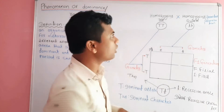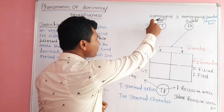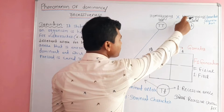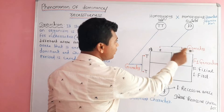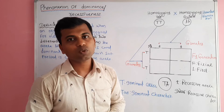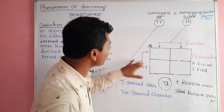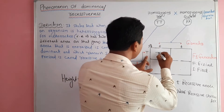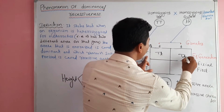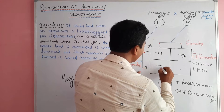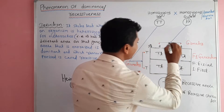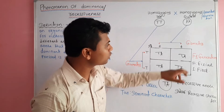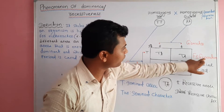During gamete formation, the tall plant forms gametes carrying the allele capital T, and the dwarf plant forms gametes carrying the allele small t. By the process of fertilization, gametes of both parents combine randomly to produce plants of the F1 generation. Here, F stands for filial and 1 stands for first — technically this is known as the first filial generation.